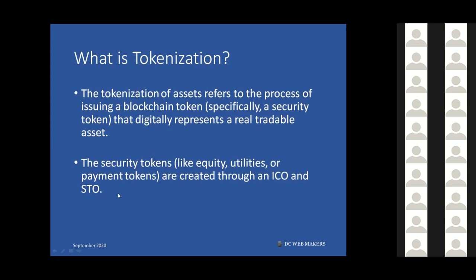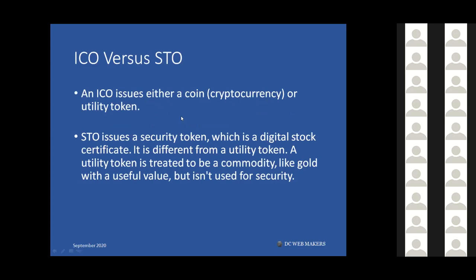Security tokens — like equity, utility, or payment tokens — are created through the ICO or STO process. There are some differences between ICO and STO. They have overlap and commonalities, but key differences exist. An ICO issues either a coin, cryptocurrency, or utility token. An STO issues a security token, which is essentially a digital stock certificate.